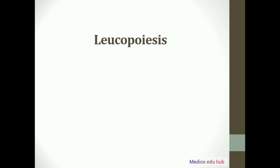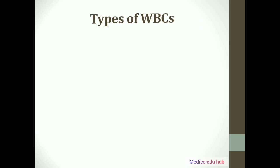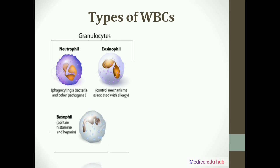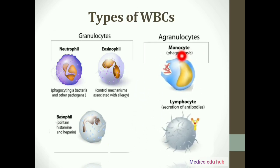What is leukopoiesis? The production of WBCs or leukocytes is known as leukopoiesis. Now we will study the types of WBC. WBCs are of two types: granulocytes and agranulocytes. Granulocytes are of three types: neutrophils, eosinophils, and basophils. And agranulocytes are of two types: monocytes and lymphocytes.